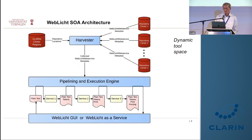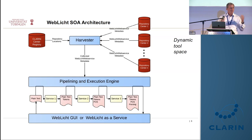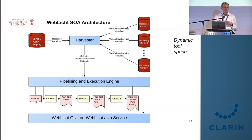Here is the WebLicht service-oriented architecture. A harvester goes to the CLARIN center registry, gets the list of all CLARIN repositories, and harvests metadata describing WebLicht-compatible tools. This defines the tool space, which is dynamic: new tools can be added and existing ones removed at any time. If you want to integrate your tool with WebLicht, you contact the developers to ensure proper integration, but tools can also be taken out at any point.